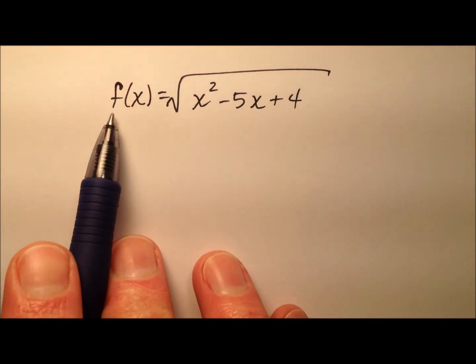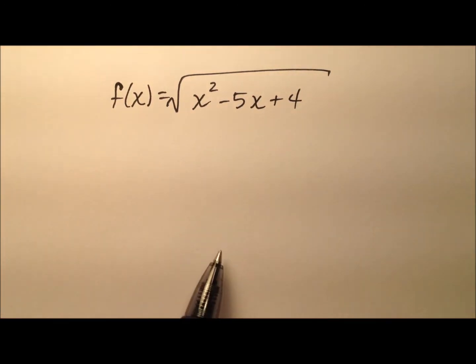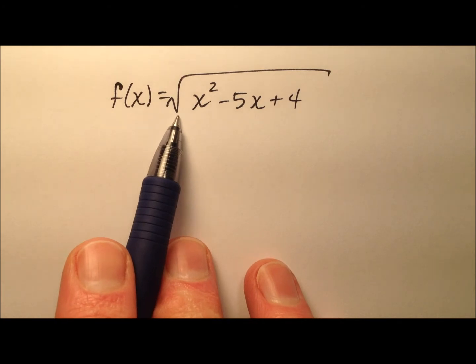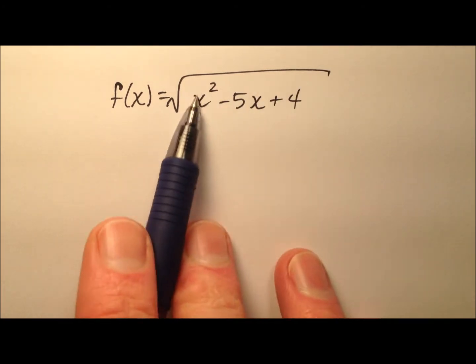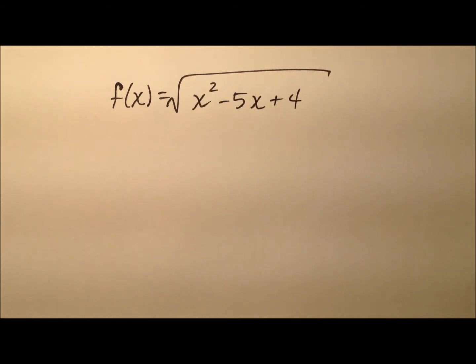In this example, we're going to determine the domain for this function. We have f(x) equals the square root of x² - 5x + 4 as our radicand. If you'd like to try this first on your own, go ahead and pause the video and do so, and then come back and we'll work it together.